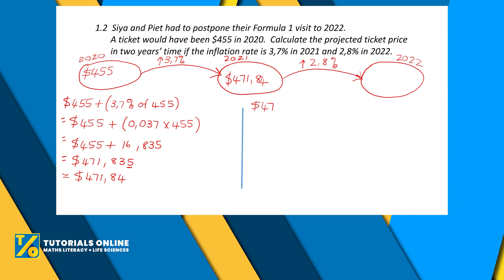Now take the 2021 ticket price of 471.84 and add 2.8% of this new price. Write 2.8% as 0.028. So it's 471.84 plus 0.028 times 471.84. Working out the bracket gives 13.21152. Adding that to 471.84 gives 485.05152.